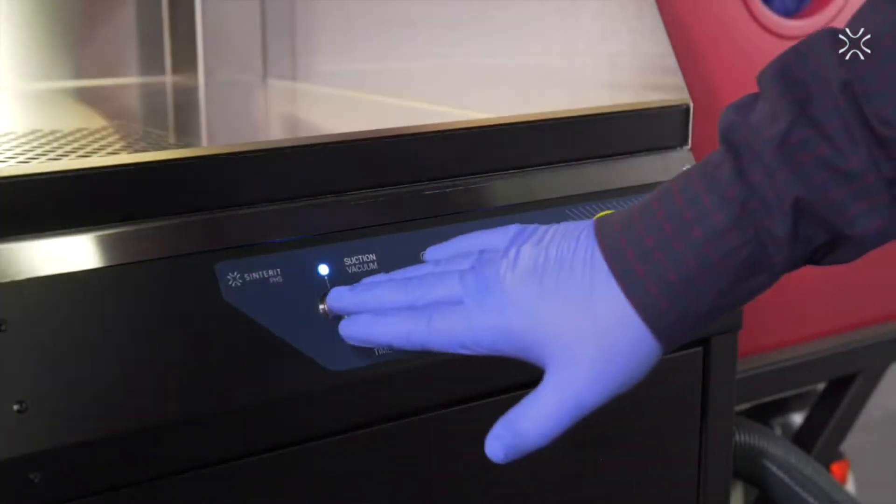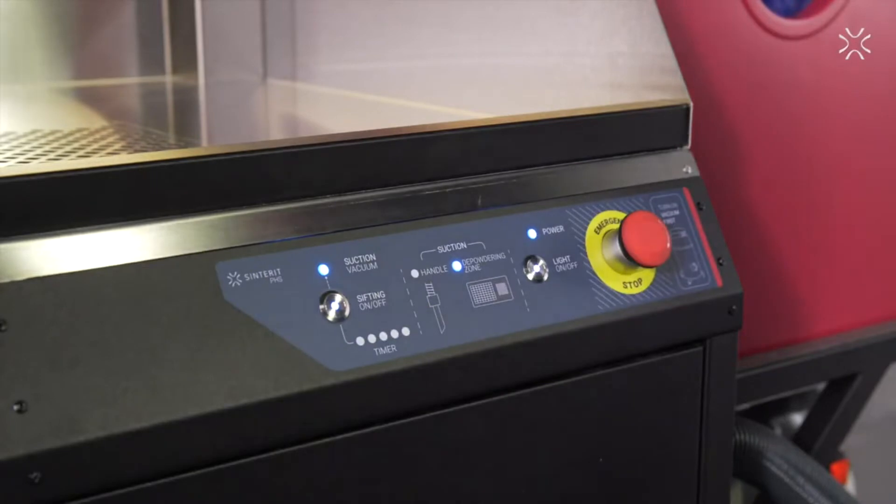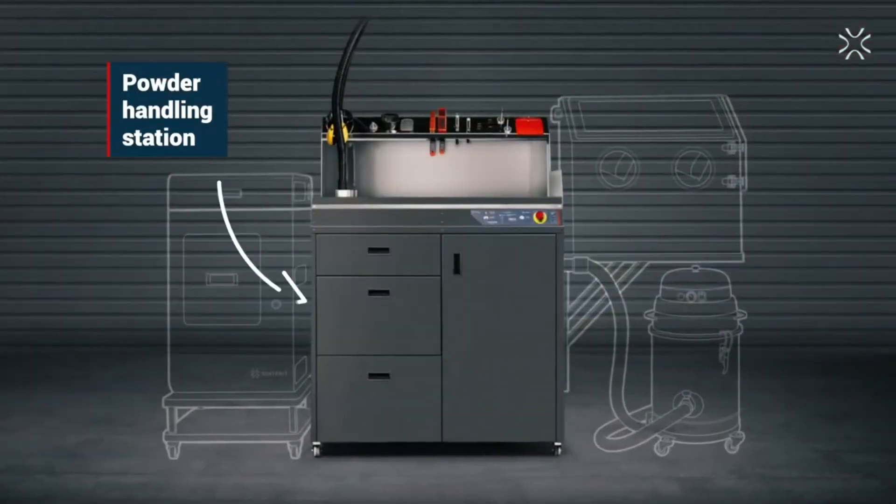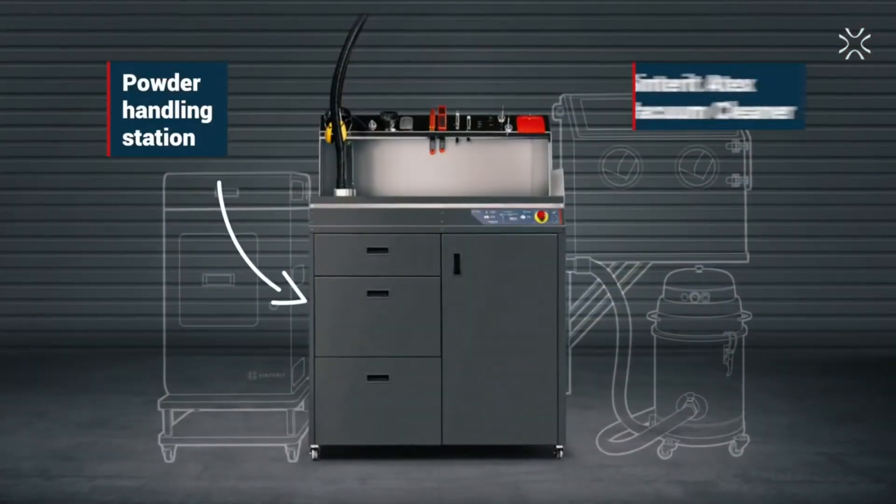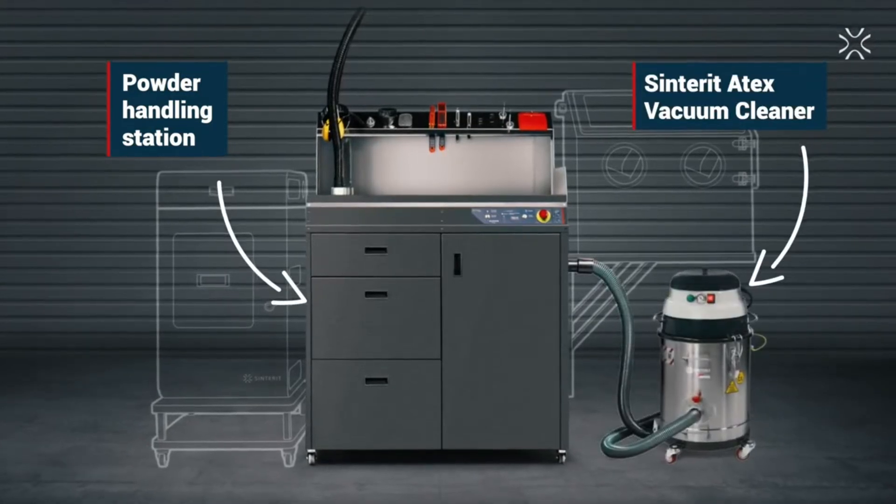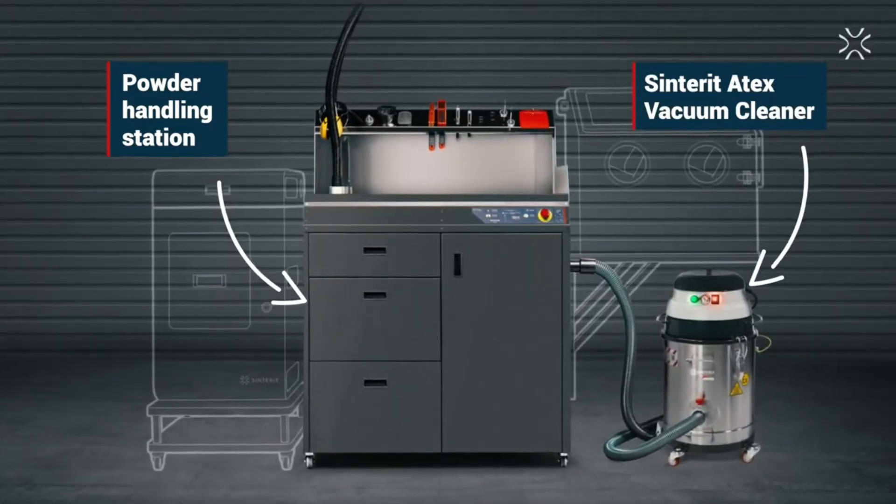How do you turn the PHS on? Simply turn on the Atex vacuum cleaner, then from the control panel turn on the lights and start the machine. You can consider the Center Atex vacuum cleaner as a suction engine for the PHS.